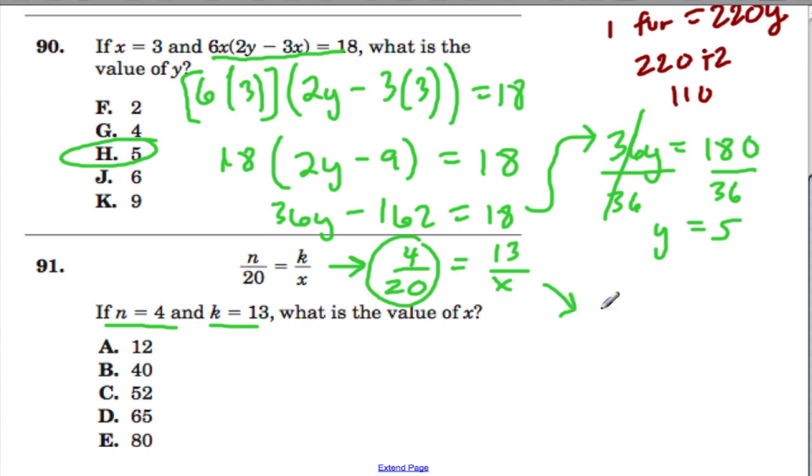I'm going to simplify this fraction. 4 over 20, divide numerator and denominator by 4, we get 1 fifth, and that's going to equal 13 over x. How do I solve this? I'm going to multiply both sides by x because we're dividing by x here. That gets rid of the x. x divided by x is 1, and 1 is irrelevant when we're multiplying and dividing. Over here, we now have x divided by 5 equals 13.